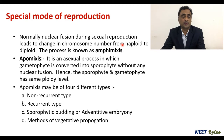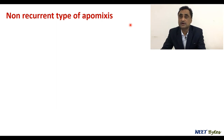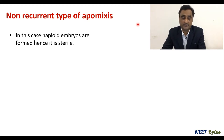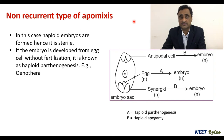First, let's talk about the non-recurrent type of apomixis. The term non-recurrent means it cannot be grown further. It is haploid, so it cannot participate in seed formation again — it will not undergo meiosis and continue the cycle. Now, a few examples: if the embryo is developed directly from the egg without fertilization, this is a typical case of haploid parthenogenesis. Haploid parthenogenesis is when the egg develops into an embryo without fertilization; we call it haploid because the embryo is developed from a haploid structure.